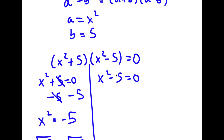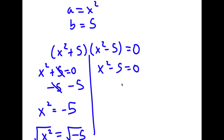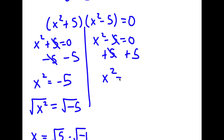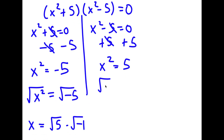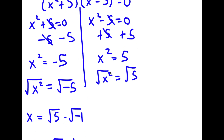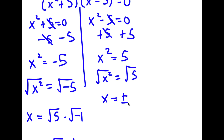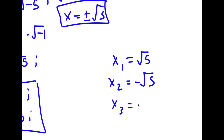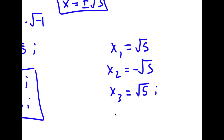For the other equation, x squared minus 5 equals 0, I add 5 on both sides to get x squared equals positive 5. Taking the square root of both sides gives x equals plus or minus the square root of 5. So my four solutions to this problem are: x equals square root of 5, x equals negative square root of 5, x equals square root of 5i, and x equals negative square root of 5i.